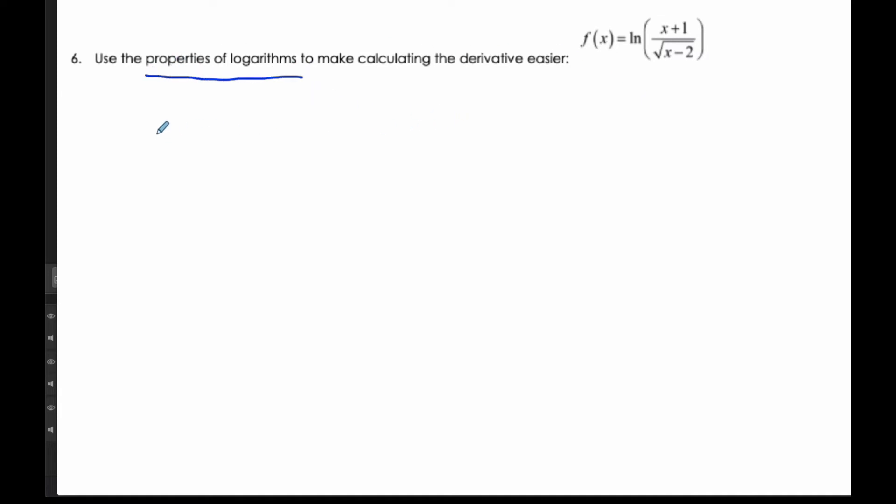The idea of simplifying functions first is really helpful. So if I'm going to rewrite this using my properties of logarithms, I know that ln(x+1), when I am dividing, it means I subtract ln(x-2). And I also know that this square root is the same as saying that it is (x-2) to the 1/2. And then I also know that this 1/2 can actually come down to the front of my logarithm.